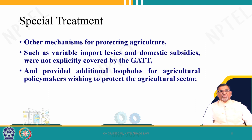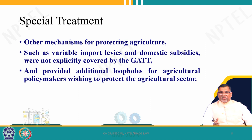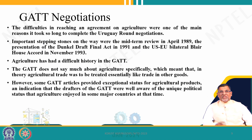We are talking about how agriculture got special treatment in GATT. There are also special treatments to protect the agriculture sector — for example, variable import levies and domestic subsidies. Variable levies as well as quotas are also imposed on agriculture imports. This means that in the agriculture sector, even though non-tariff barriers were completely banned in other sectors, within GATT negotiations they are allowed for agriculture.